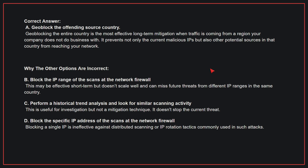Why the other options are incorrect: B — Block the IP range of the scans at the network firewall. This may be effective short-term but doesn't scale well and can miss future threats from different IP ranges in the same country. C — Perform a historical trend analysis and look for similar scanning activity. This is useful for investigation but not a mitigation technique; it doesn't stop the current threat. D — Block the specific IP address of the scans at the network firewall. Blocking a single IP is ineffective against distributed scanning or IP rotation tactics commonly used in such attacks. Therefore, the correct answer is A.